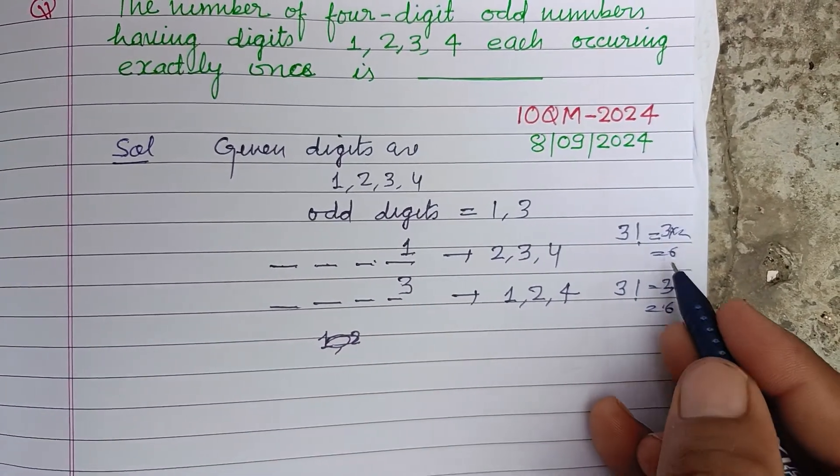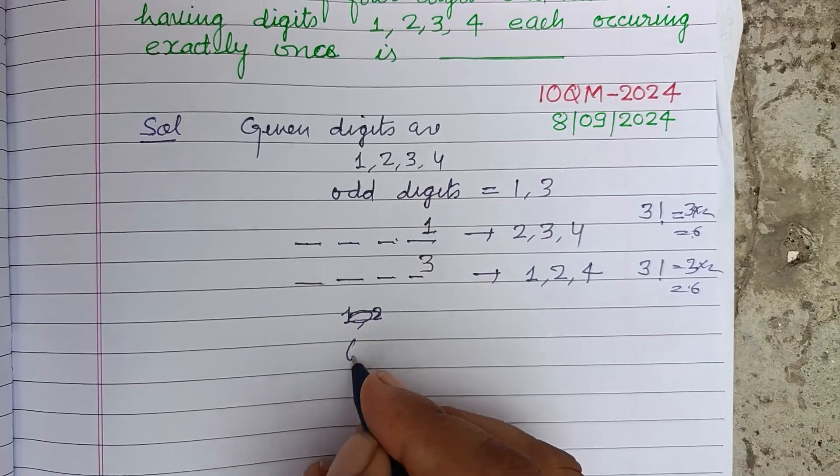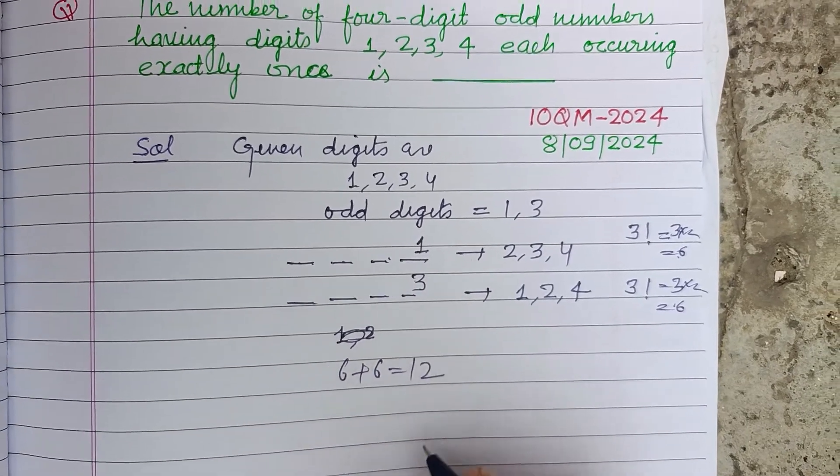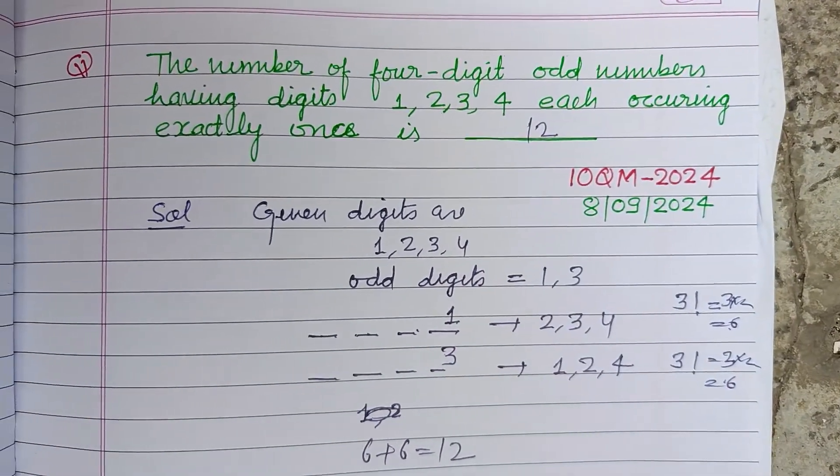So 6 plus 6 is 12. So 12 is the correct answer to this question. I hope you got it. Please like the video, subscribe to the channel. Thanks.